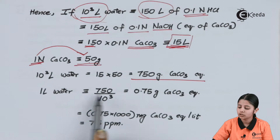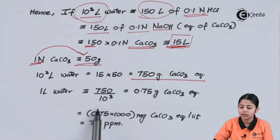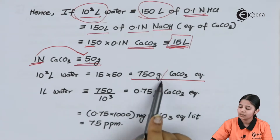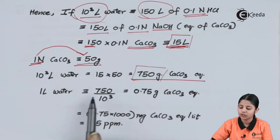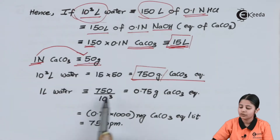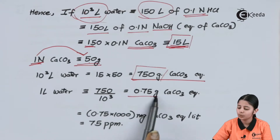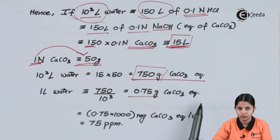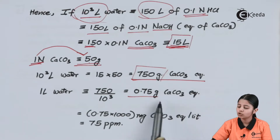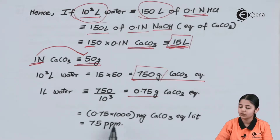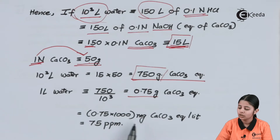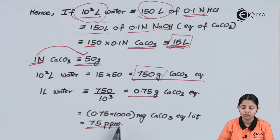For one liter, we divide: 750 ÷ 10³ = 0.75 grams of CaCO3 equivalent. Converting grams to milligrams: 0.75 × 1000 = 750 mg/L, which corresponds to 75 ppm. So the hardness of the water sample is 75 ppm.